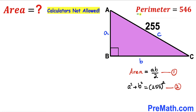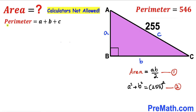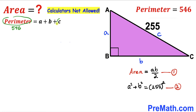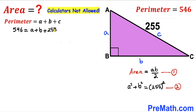We know the perimeter of this triangle is 546, and the perimeter is just the sum of all three sides: a + b + c = 546. Since c = 255, we can write 546 = a + b + 255. Subtracting 255 from both sides gives us a + b = 291.